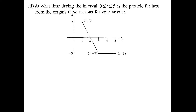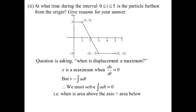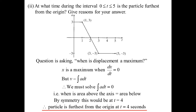At what time is the particle furthest from the origin? That's when displacement is a maximum, which occurs when velocity equals zero — i.e., when the integral of acceleration equals zero. We look for when the area above the axis equals the area below. By symmetry of the graph, from 0 to 2 gives a positive value and from 2 to 4 gives the same magnitude negative, so the answer is t = 4 seconds.